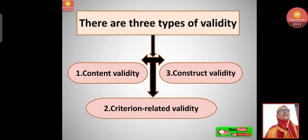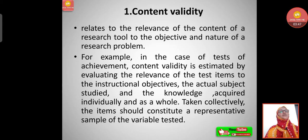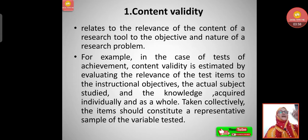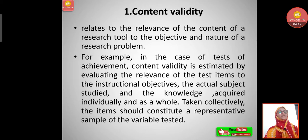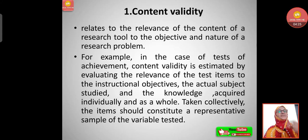There are three types of validity: content validity, criterion-related validity, and construct validity. Content validity relates to the relevance of the content of a research tool to the objective and nature of a research problem. In the case of achievement tests, content validity is estimated by evaluating the relevance of test items to the instructional objectives, the actual subject studied, and the knowledge acquired individually and as a whole.